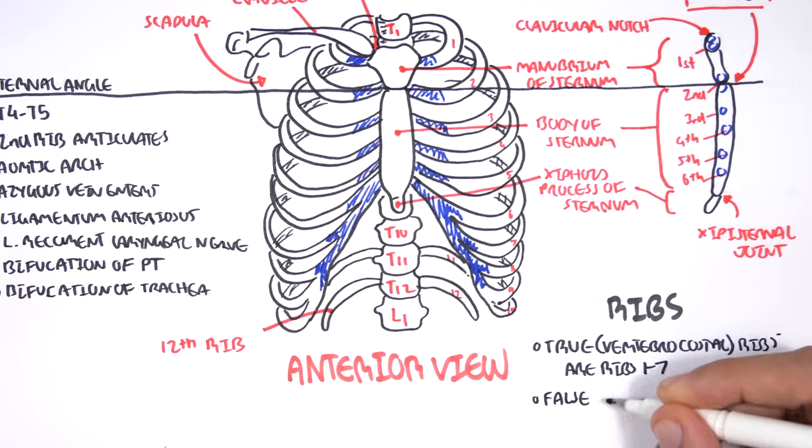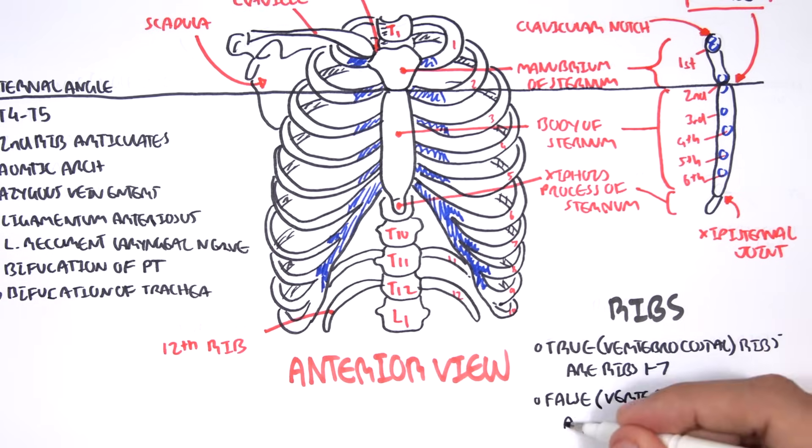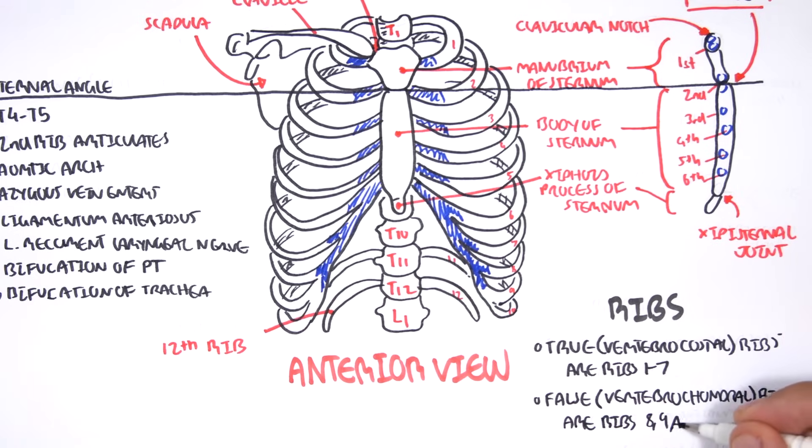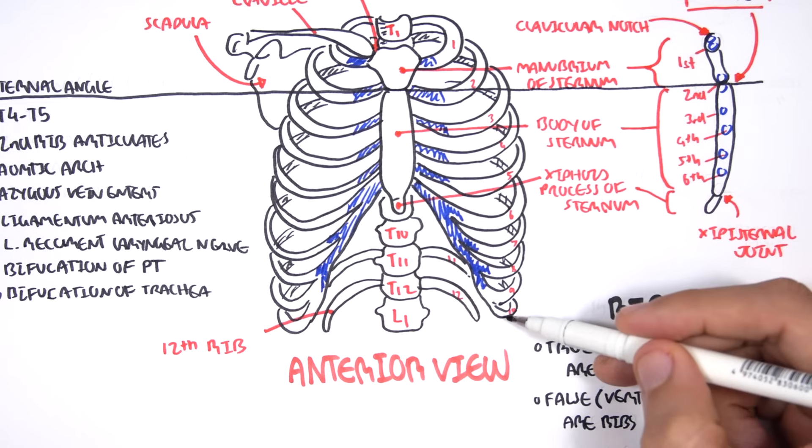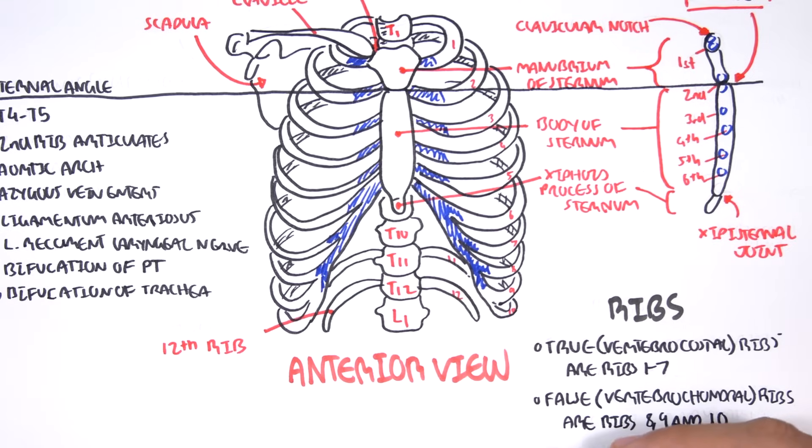Then you have false ribs, or vertebrochondral ribs, which are ribs 8, 9, 10. And these ribs originate from the vertebra and attach to the sternum by joining to the cartilages of ribs 6 and 7.